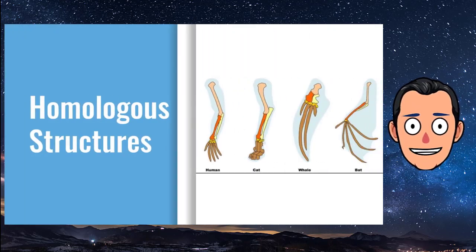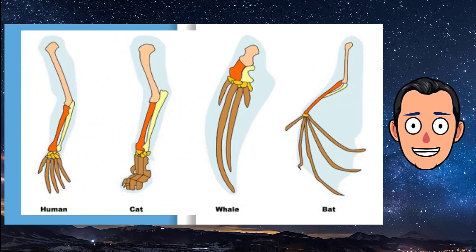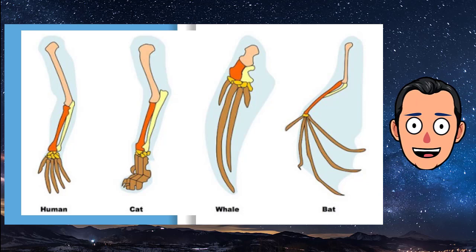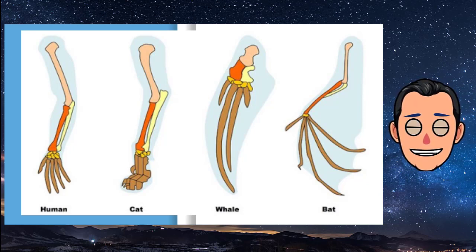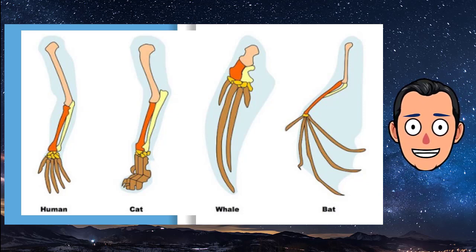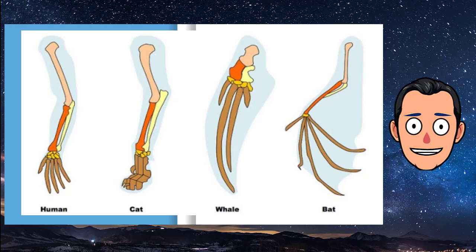Homologous structures are structures that are similar in related organisms because they were inherited from a common ancestor. These structures may or may not have the same function in the descendants. For example, the hands of several different mammals all have the same basic pattern of bones, inherited from a common ancestor. However, their forelimbs now have different functions.